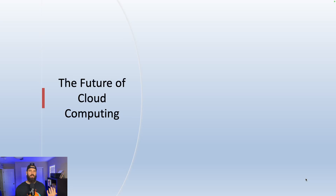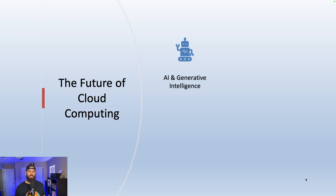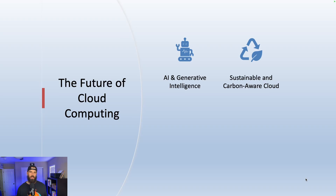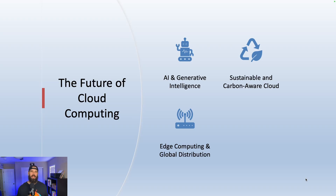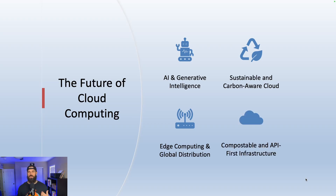What does the future of cloud computing look like? Generative AI is driving major demand for cloud-based machine learning platforms and model APIs — providers like AWS Bedrock, Azure OpenAI, and Google Vertex AI make it accessible to all. Sustainability is growing in importance, with carbon tracking dashboards, green regions, and energy-efficient infrastructure. Edge computing and global distribution mean real-time apps in gaming, retail, and industrial IoT require compute at the edge — cloud is expanding into local regions, 5G zones, and even satellite link zones. API-first infrastructure with tools like Terraform, the CDK, and Kubernetes means teams can automate, version, and collaborate on cloud infrastructure just like software.